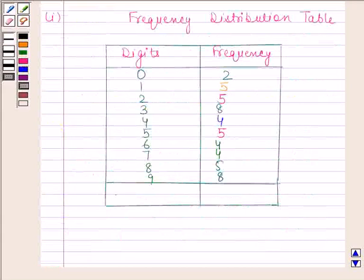Following the same pattern, we find that frequency of 6 is 4, frequency of 7 is 4, frequency of 8 is 5, frequency of 9 is 8.